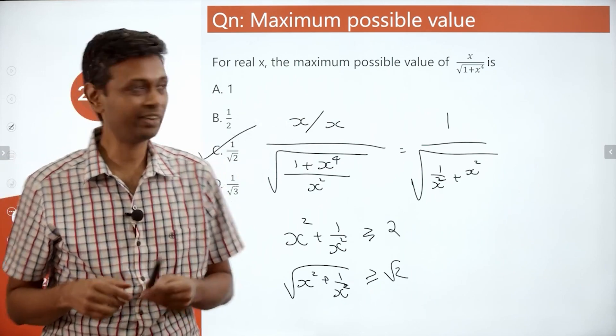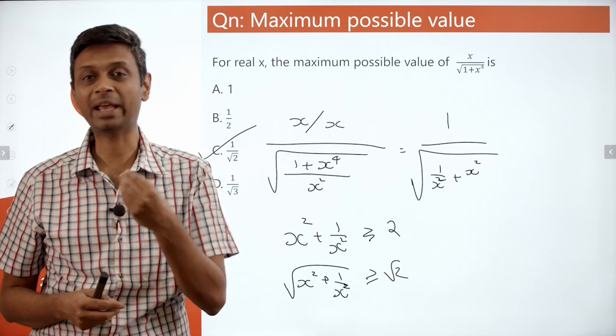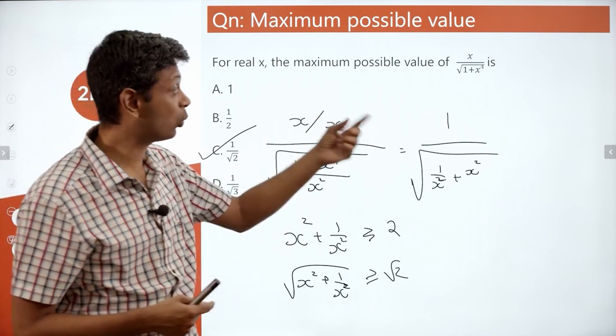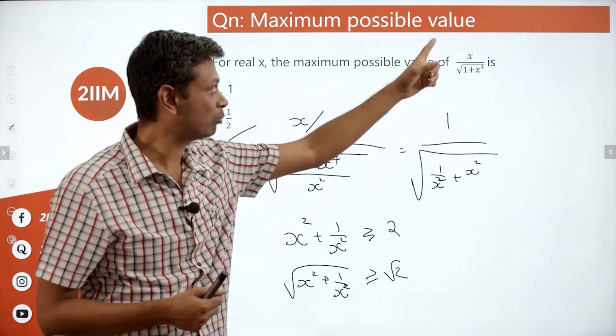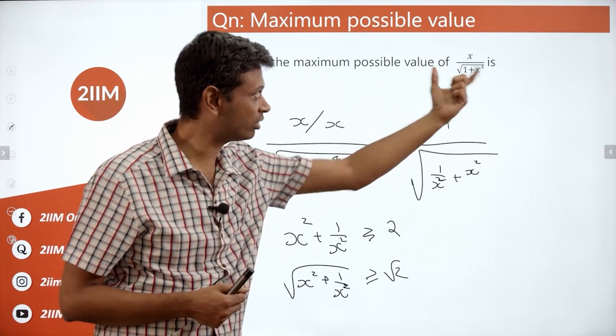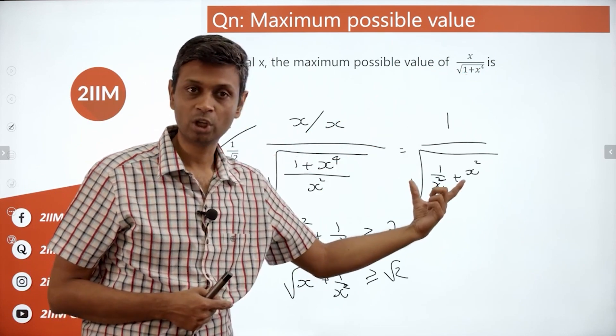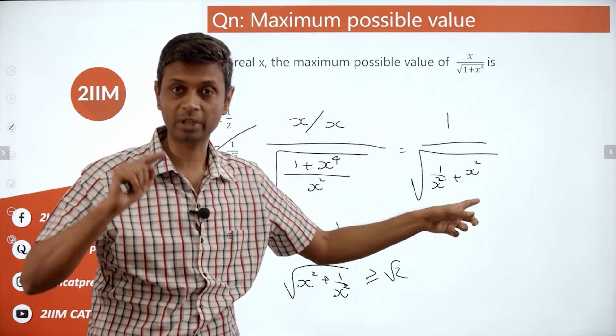The first thing, divide numerator and denominator by x. Numerator gets divided by x. Denominator gets divided by x square inside the root. Then modify this. You need to be able to see this expression as this expression. We know how x square plus 1 by x square behaves.